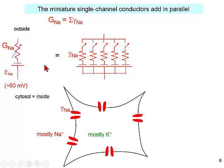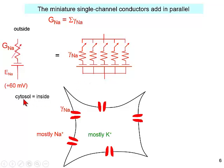The battery associated with that macroscopic conductance is the battery for all of these little channels. For sodium — we usually use sodium in red — the Nernst potential for sodium is plus 60 millivolts. There are more sodium ions on the outside than on the inside, which we derived from first principles at the beginning of last week. And there are mostly potassium ions on the inside. So electrically, it's very convenient to talk about this combination of phenomena.